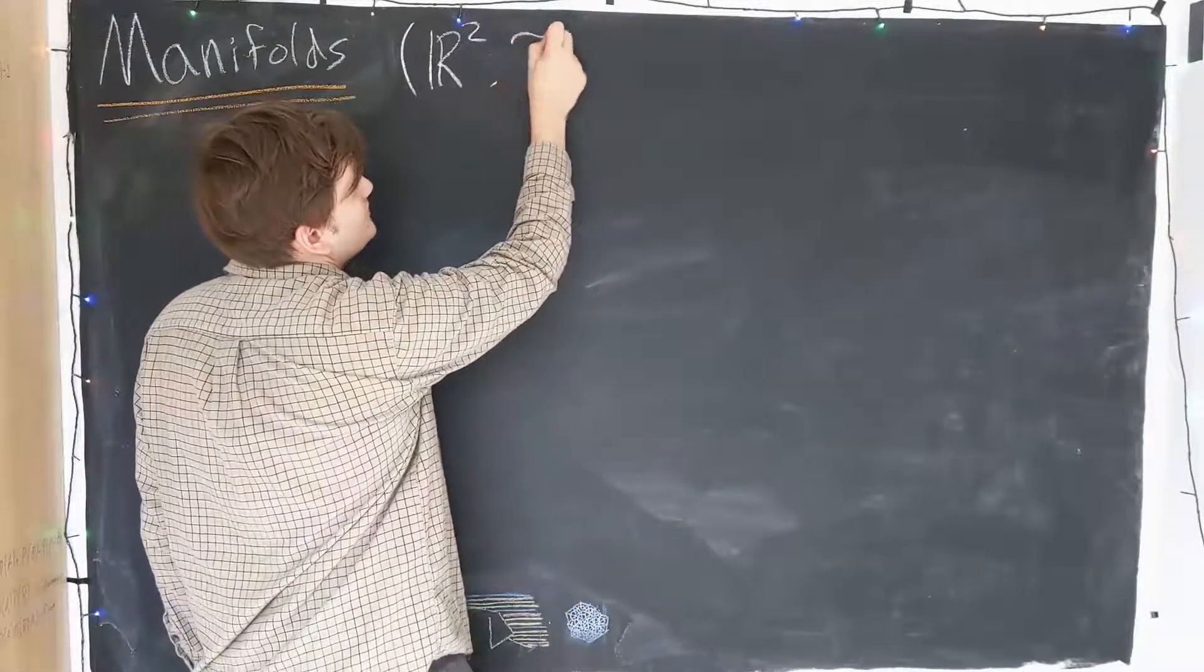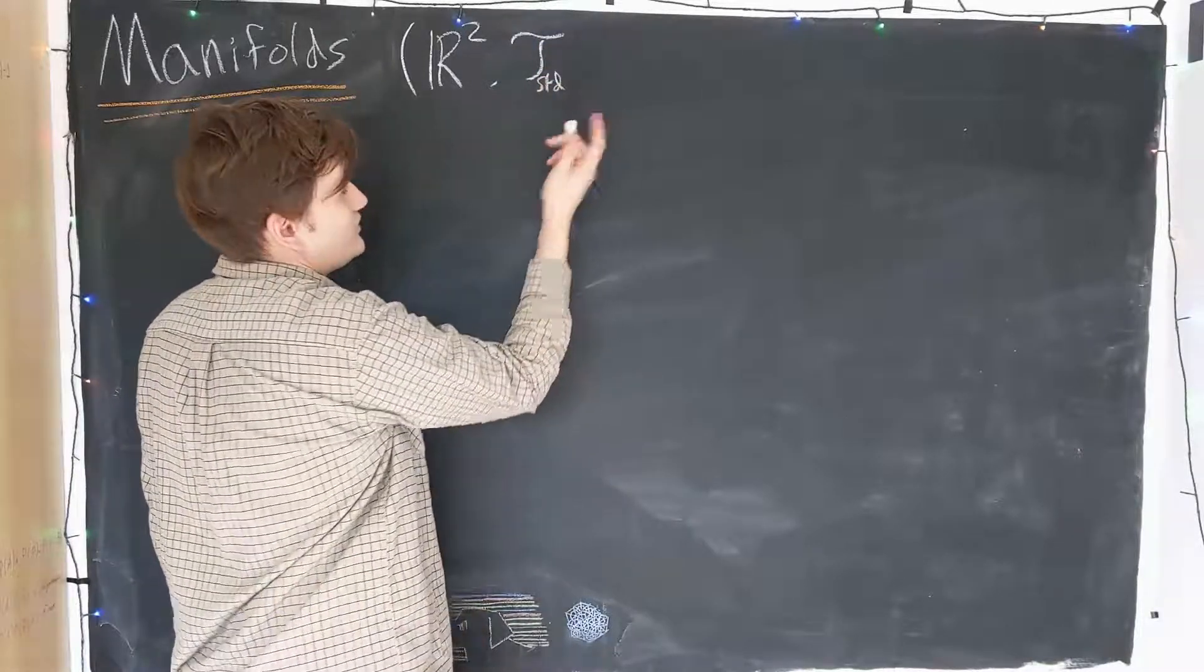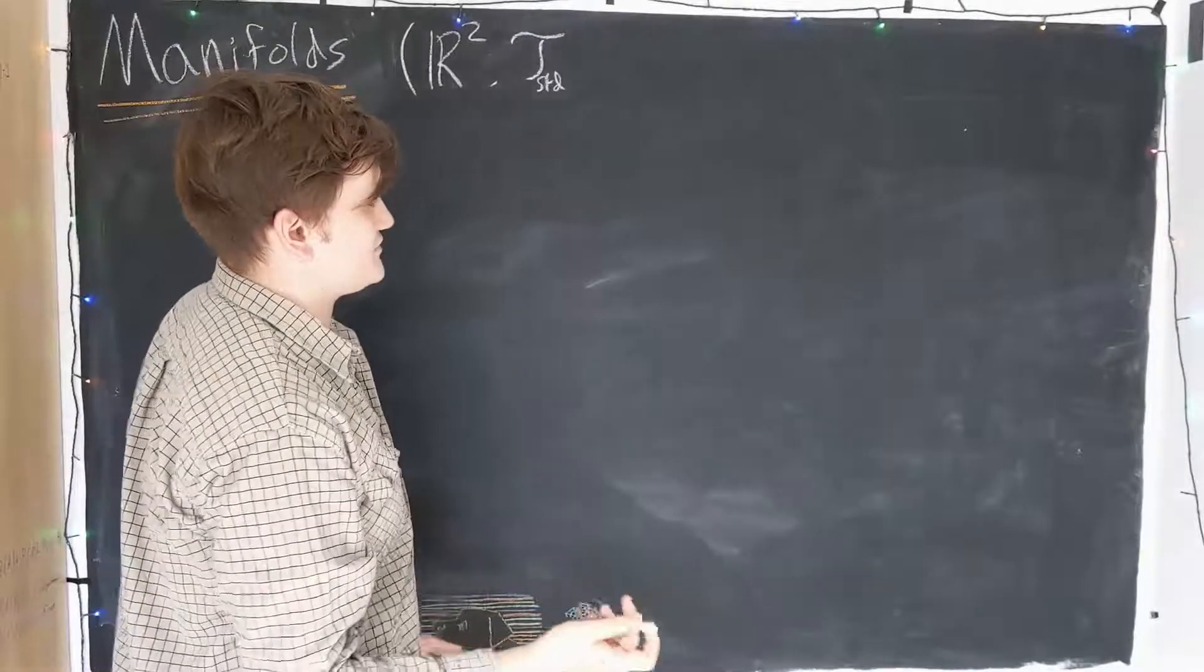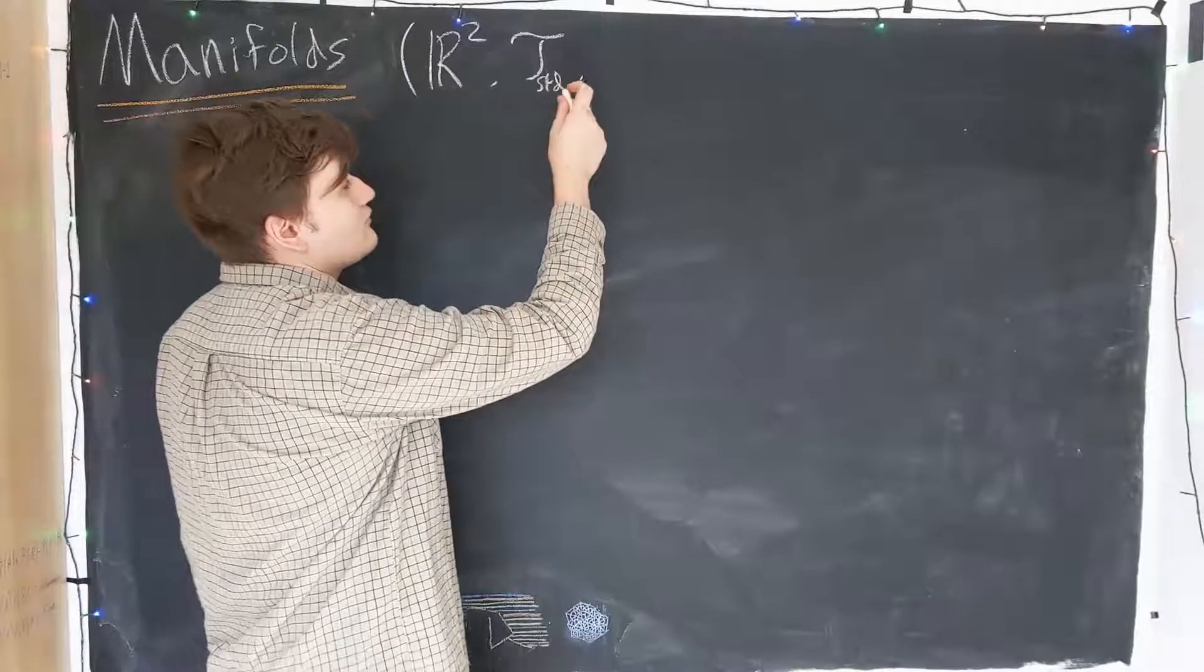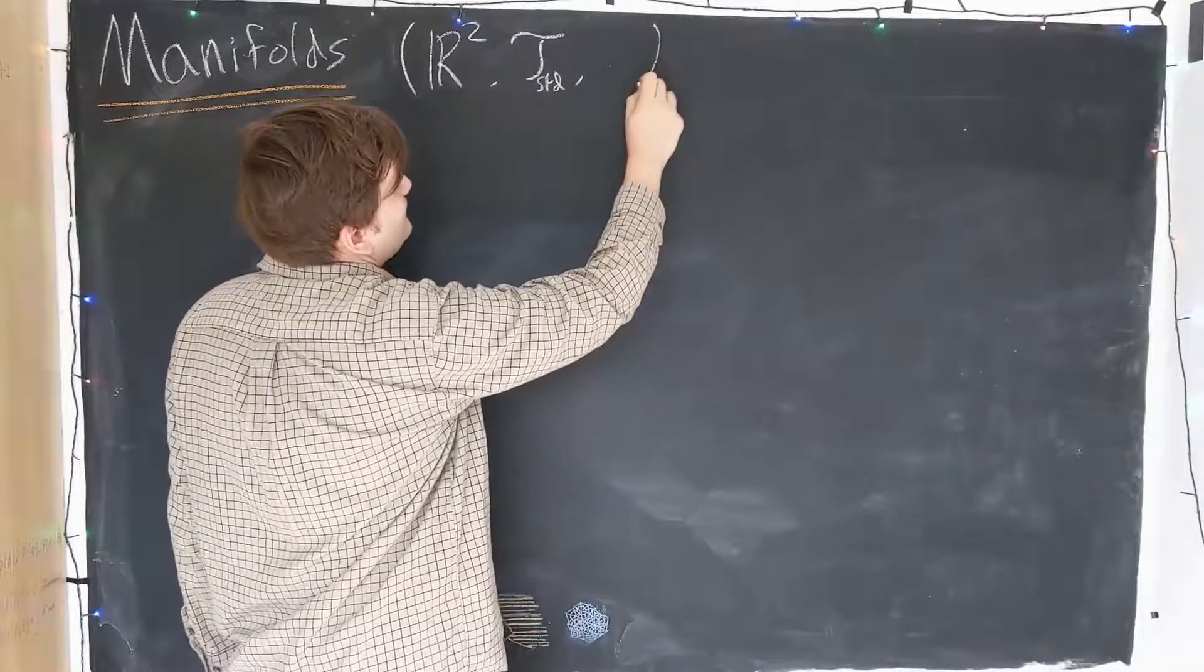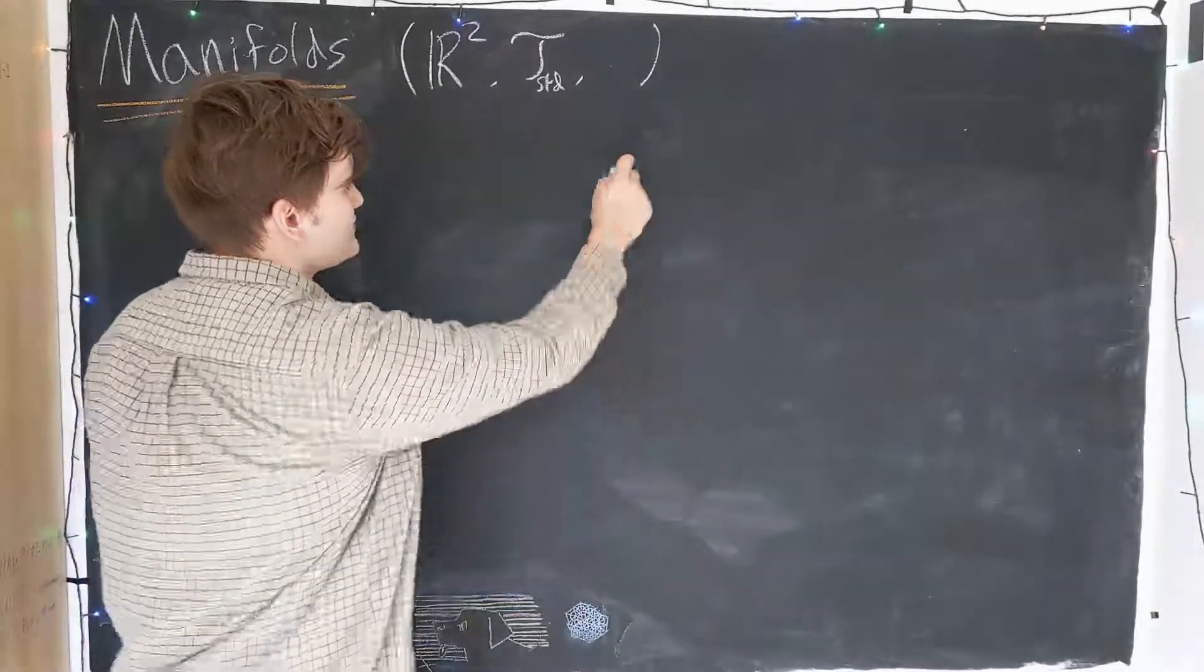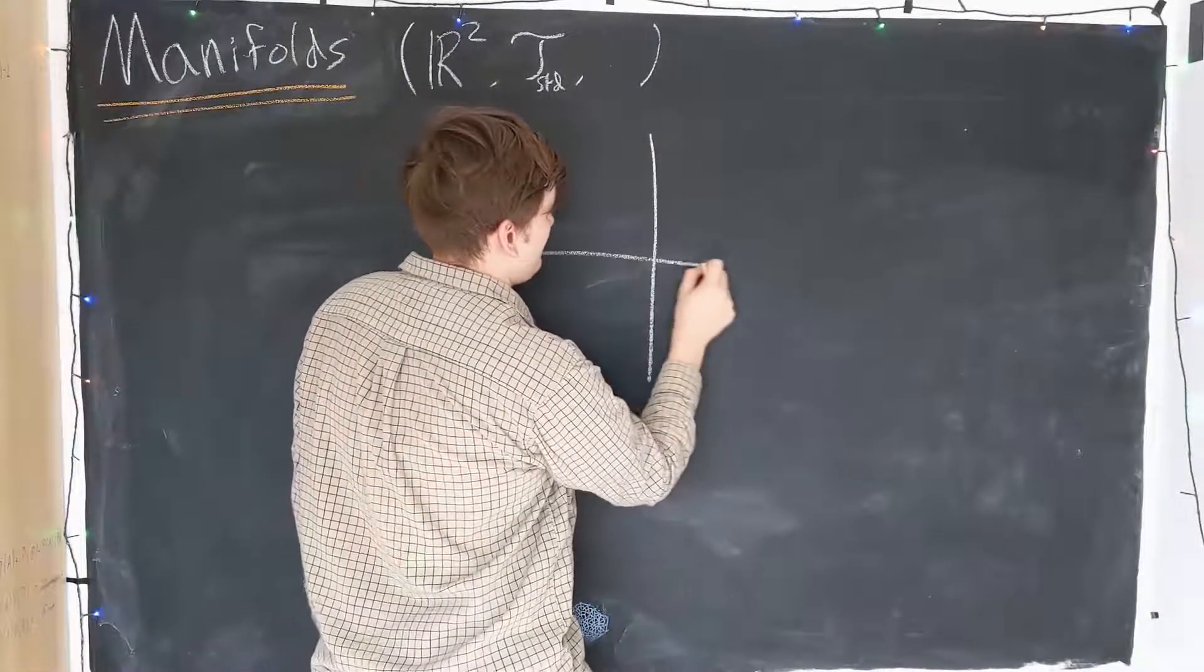Which we know is a topological space with now the standard topology. We saw how to construct this using open balls and such. Now we can consider an atlas. I'll leave that blank for now. So how does this space look?